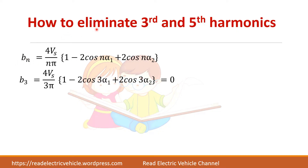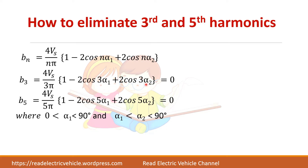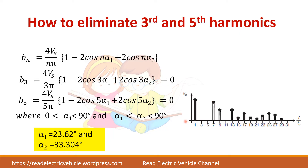If I want to eliminate the third and fifth harmonics, I find B3 by substituting N equal to 3, giving one equation, and then substitute N equal to 5 to eliminate the fifth harmonic. So we have two equations with two unknown variables, alpha 1 and alpha 2, where alpha 1 lies between 0 and 90 degrees and alpha 2 lies between alpha 1 and 90 degrees. With this condition you solve the equations — it is difficult to solve manually. You have to apply computing methods or iteratively do some calculations to find alpha 1 and alpha 2. In that case, you can see that the 3rd and 5th harmonics are eliminated from the output voltage.